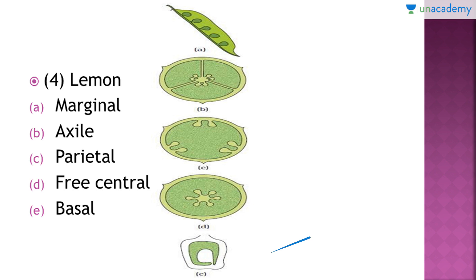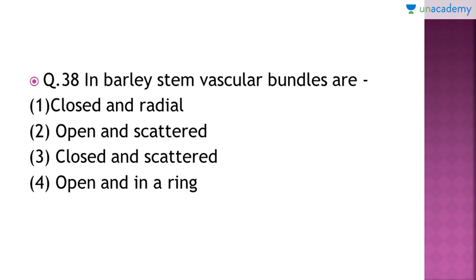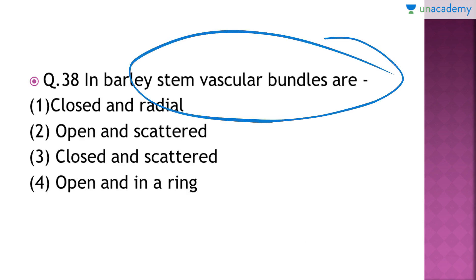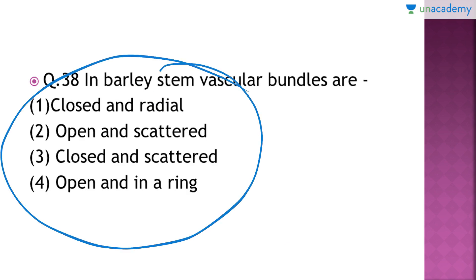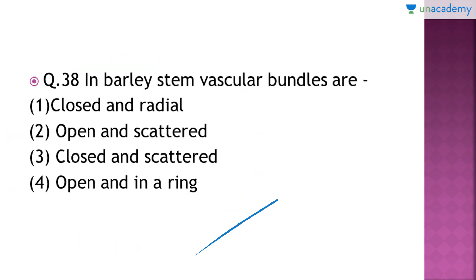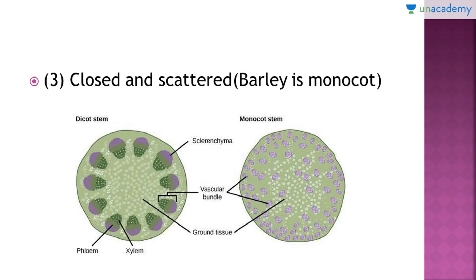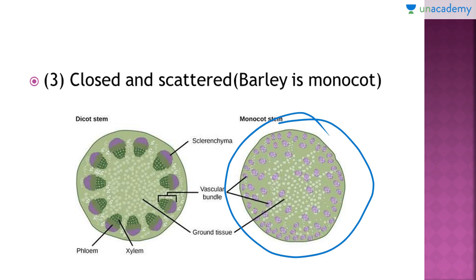Question number 38: in barley stem, vascular bundles are arranged in which fashion? I can give you a slight hint — just guess whether barley is monocot or dicot, and you will be able to answer. The right answer is option number three: since barley is a monocot plant, the vascular bundles are closed and scattered. Here you can see the cross-section of a monocot stem where the vascular bundles are closed as well as scattered.